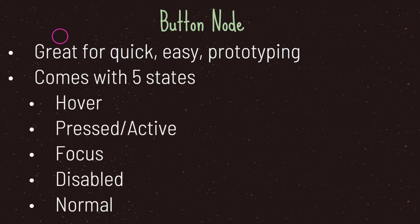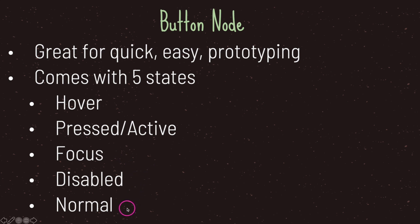The button node is a great way to prototype UI elements for your game. The button node comes with five states: the normal state (which is Godot's term for the default state), the pressed state (also known as the active state), the focus state, the disabled state, and the hover state.